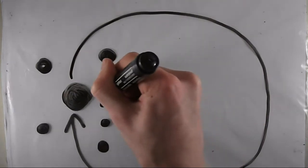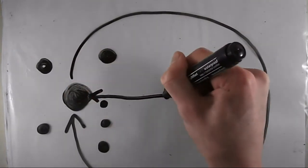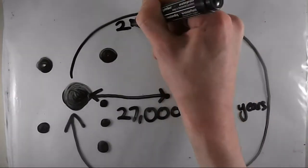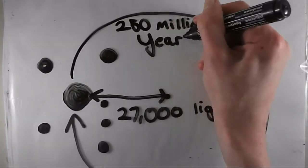The Sun is quite far away from the center of the Milky Way though, around 27,000 light years away, and it takes the Sun around 250 million years to make just one orbit.